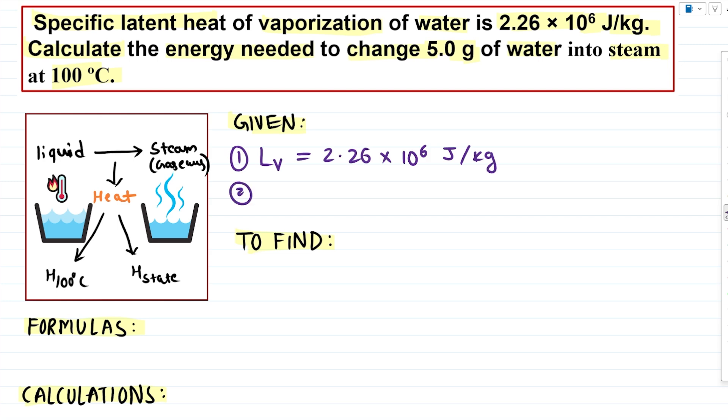Now second quantity that is given, that is the mass of our water. So I will represent it with M and that mass is said to be 5 grams. So 5 grams we have written. Now there's a small conflict.